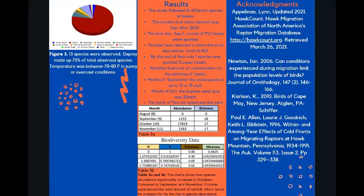Underneath results, you will see a chart, Table 3A, which talks about the months and the abundance and richness, reported that October was the highest with the abundance and richness as well. Below that, you have Table 3B, which is biodiversity data. This is to inform you on the species abundance significantly increasing in October compared to September and November. October experienced the least amount of rainfall, which would be the reason for the rise of species abundance.